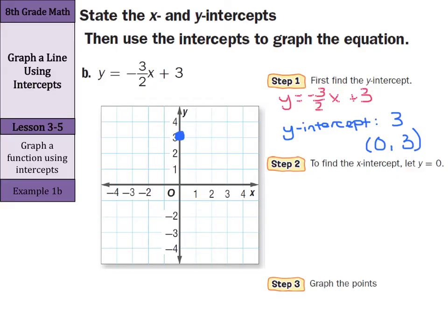To find the x-intercept, let y equal 0. So in my equation, y equals negative 3 halves x plus 3. If y equals 0, then we'll substitute in 0 for y equals negative 3 halves x plus 3. Again, our goal is going to be to get the x alone to solve for x here. You can do that by subtracting this 3 from both sides. You're left with negative 3 equals negative 3 halves x.